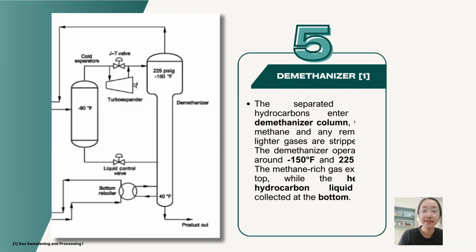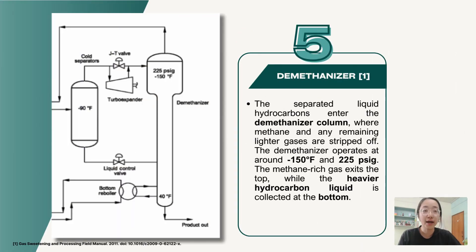The separated liquid hydrocarbons enter the demethanizer column at around negative 150 degrees Fahrenheit and 225 PSIG, where methane and any remaining lighter gases are stripped off.